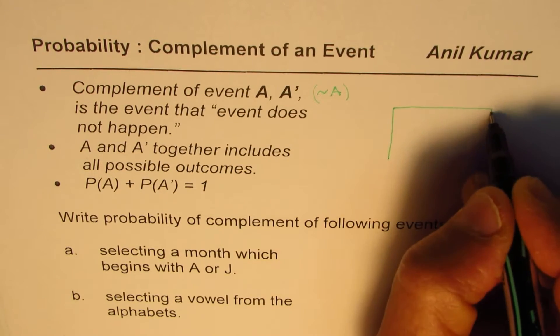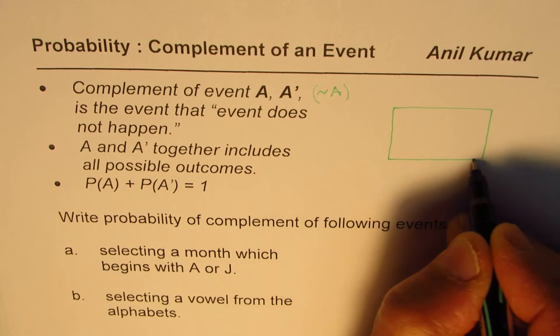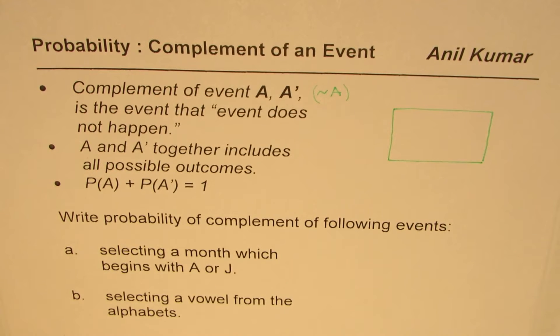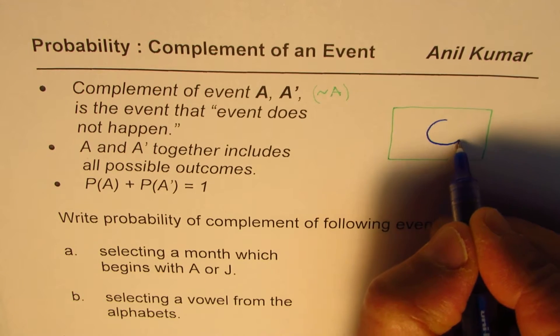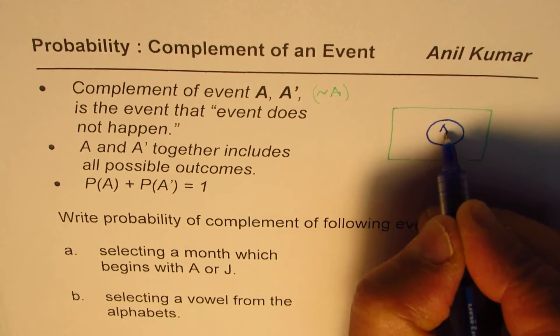So what we are trying to say here is that let's say these are all the outcomes which we are looking into and in which we are defining one particular event. Let's say this is the event A which we're talking about. This is the event A.